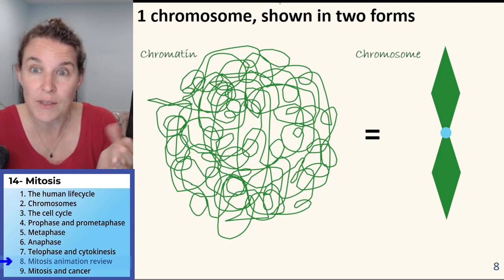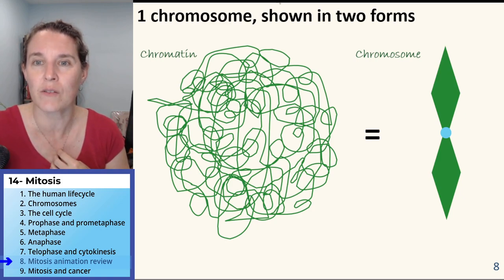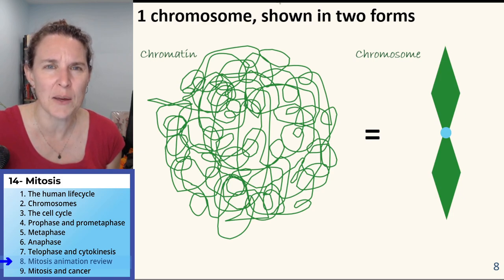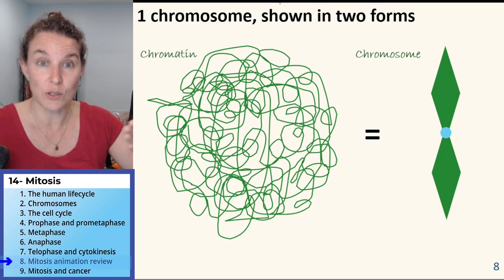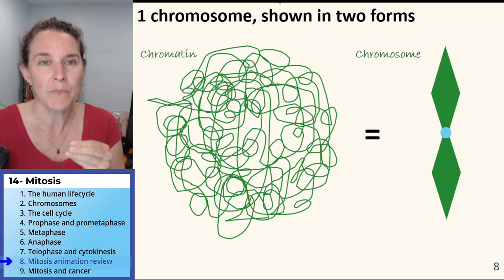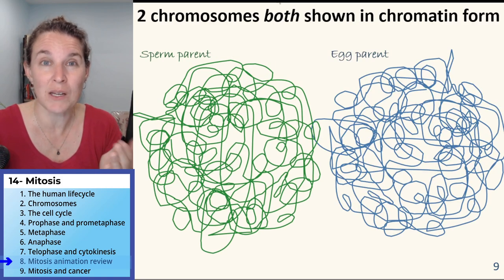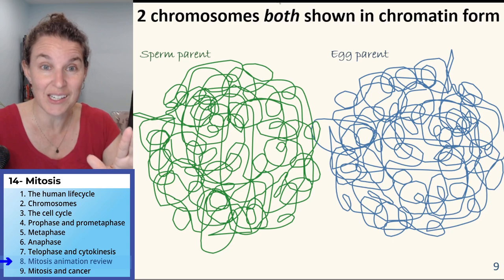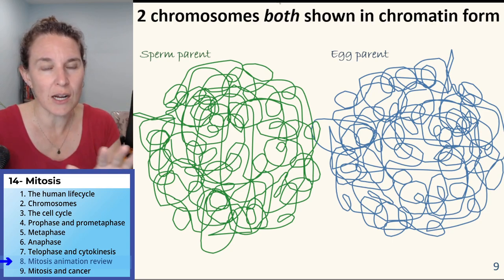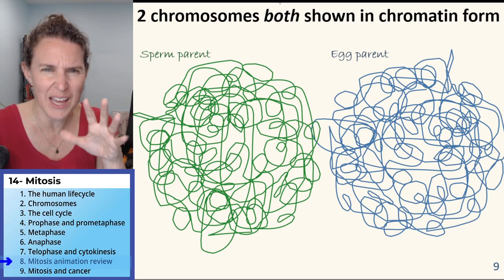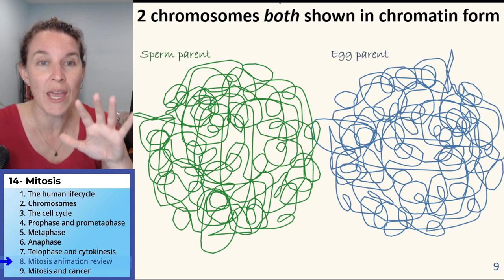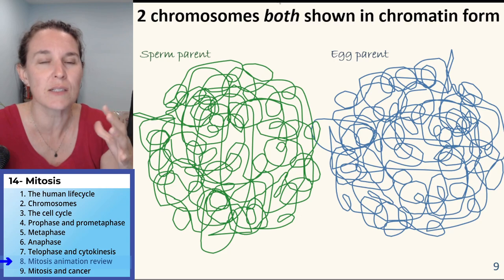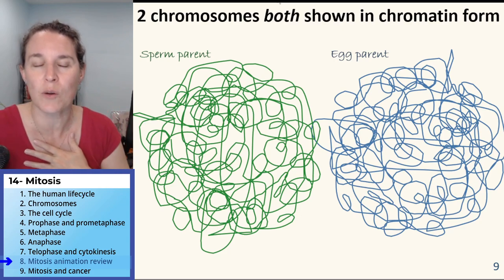And then I do know that somewhere in here, we're going to get to watch the whole process of mitosis take place. First thing, it's probably a good idea to see how I am representing the chromatin loosely wound and the chromosomes tightly wound. In this illustration, we're going to have the sperm parent in green and the egg parent in blue.